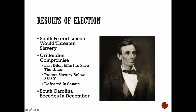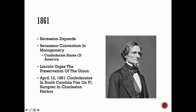As a result of this election, many people in the South feared Lincoln would threaten slavery. There was an attempt at a compromise to protect slavery below the Missouri Compromise Line at 36°30', but it didn't work out. In December of that year, South Carolina took the first steps and seceded from the union. The next year, secession continued; other states fell in line in the South, and the Confederate States of America was formed with Jefferson Davis elected as their president. Lincoln wanted to preserve the union, but on April 12, 1861, the Civil War began when Confederates fired on Fort Sumter in Charleston, South Carolina's harbor.